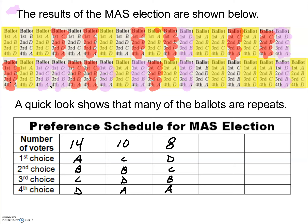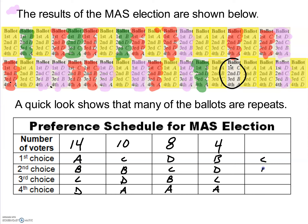The next ballot order is B first, D second, C third, and A fourth — BDCA. Highlighting all ballots with that order and counting them up, I find 4 people chose that order. Finally, the last remaining ballot is C first, D second, B third, and A fourth — CDBA — and only 1 voter chose that order.